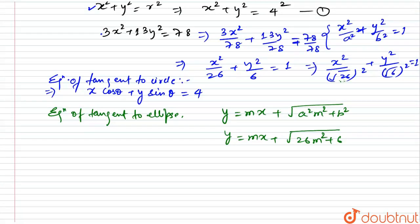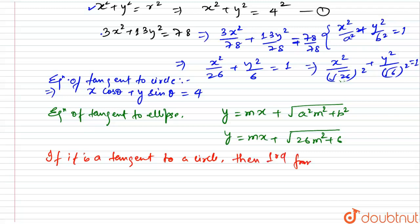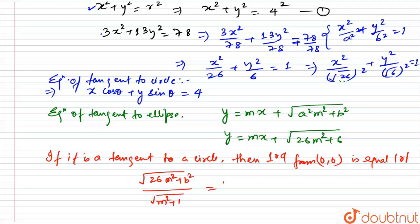If the line is a common tangent to the circle, then the perpendicular distance from (0, 0) to the tangent must equal the radius r. We know that the line from the center perpendicular to the tangent passes through the point of contact. So we can write: √(26m² + 6) / √(m² + 1) = |r|.